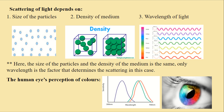Scattering of light depends on the size of particles, density of medium, and wavelength of light. Here, the size of particles and density of the medium is the same. Only the wavelength is the factor that determines the scattering. In this case, human eye perception of colors is considered.